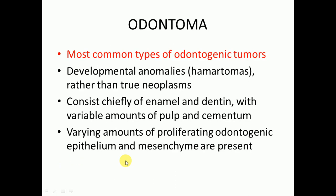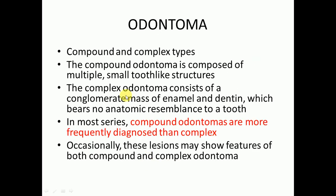Today we will discuss about odontomas. It is the most common type of odontogenic tumor. They are developmental anomalies — hamartomas rather than true neoplasms. They consist chiefly of enamel and dentine with variable amounts of pulp and cementum when mature, and in early stages of development they have varying amounts of proliferating odontogenic epithelium and mesenchyme.